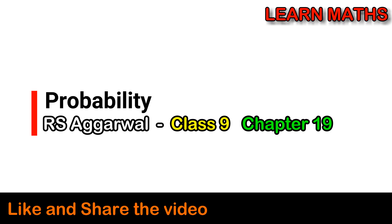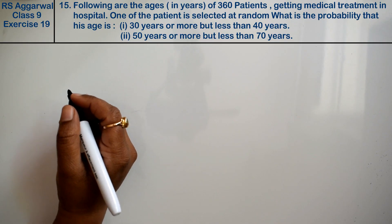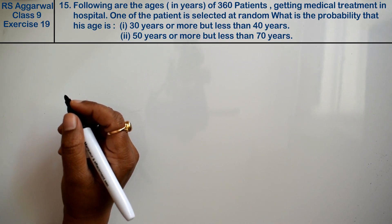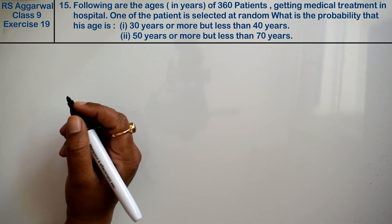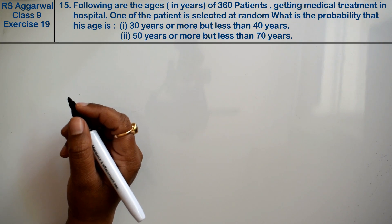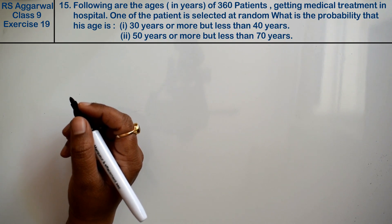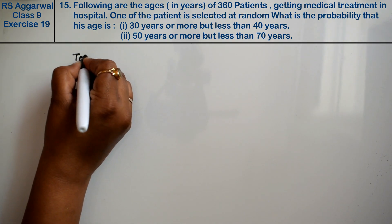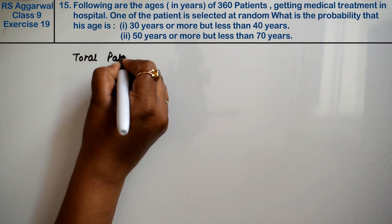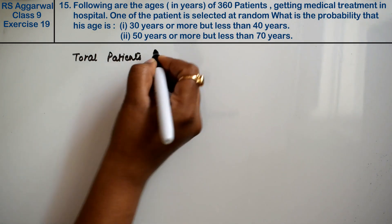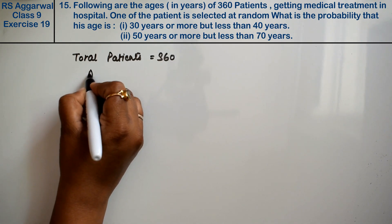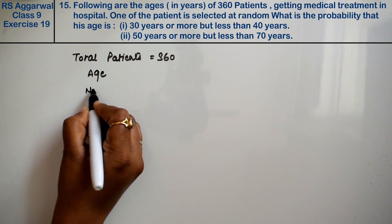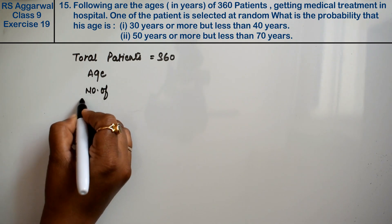Let's do question number 15 of exercise 19, that is a probability question. Following are the ages in years of 360 patients getting medical treatment in a hospital. The age group and number of patients are given in a table. Total patients equals 360.